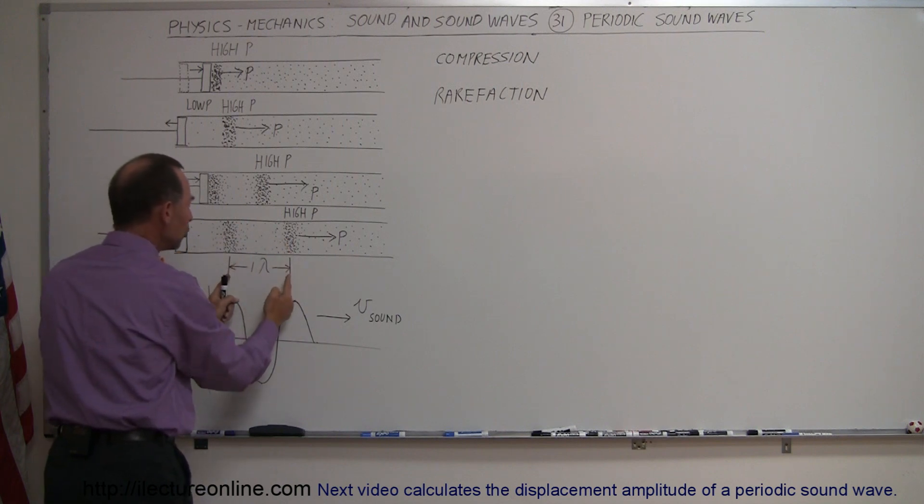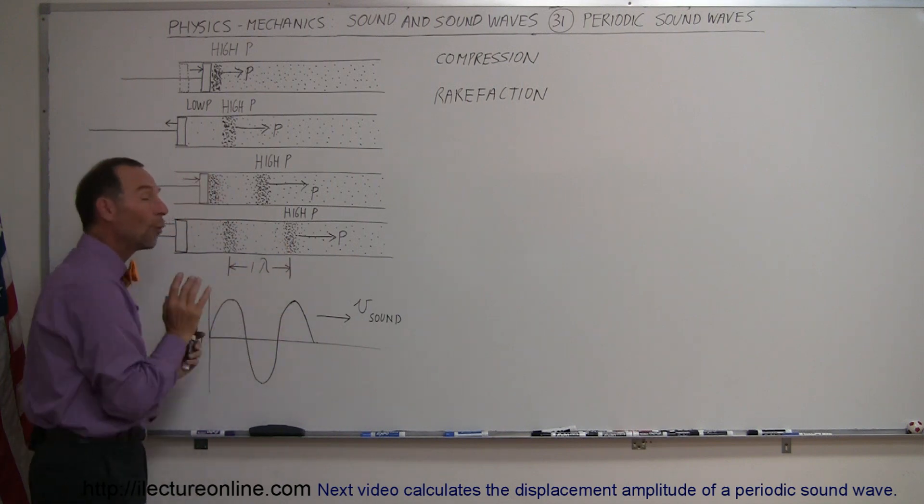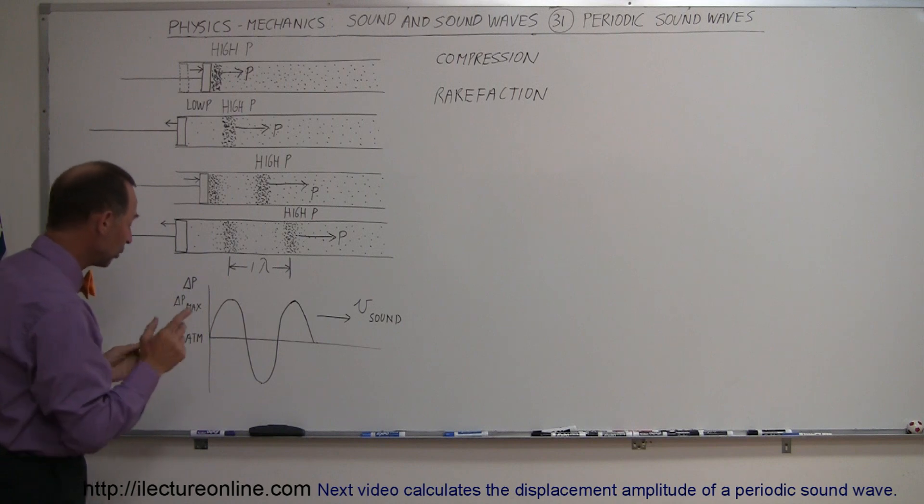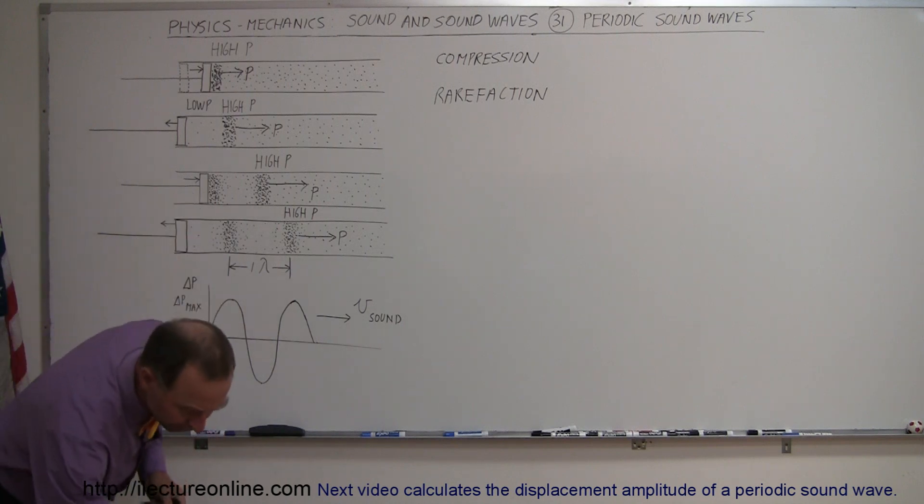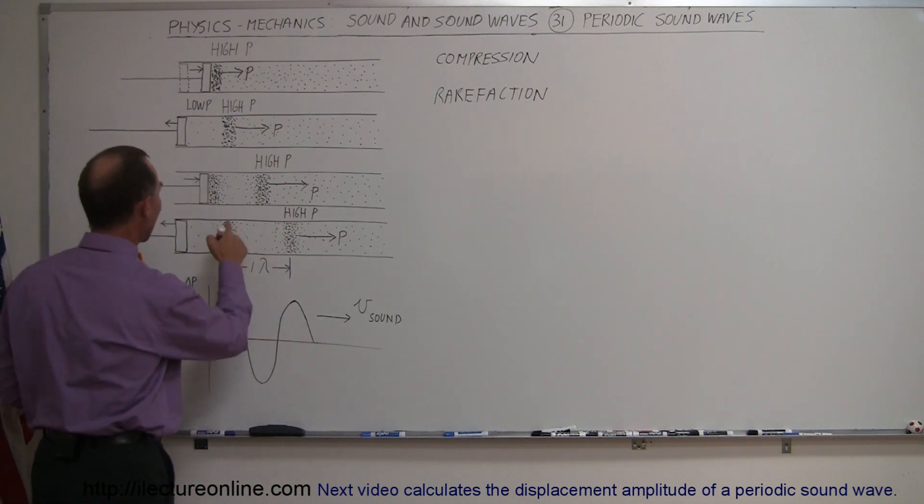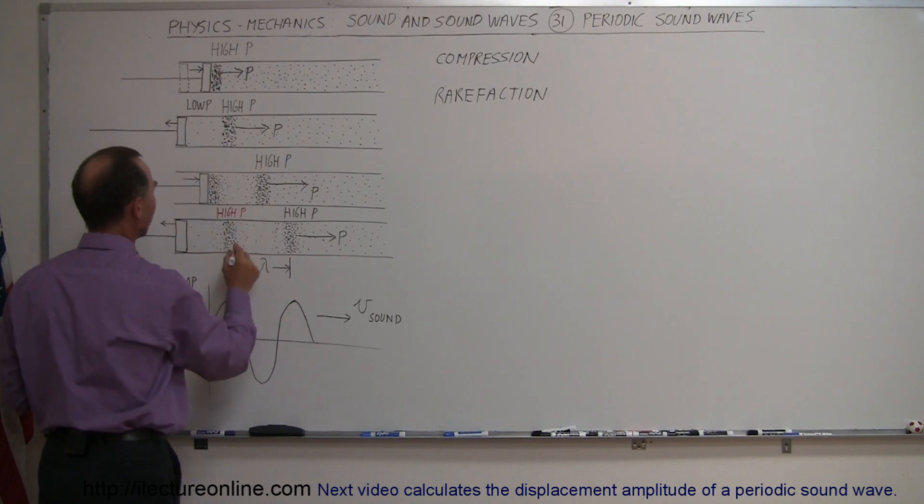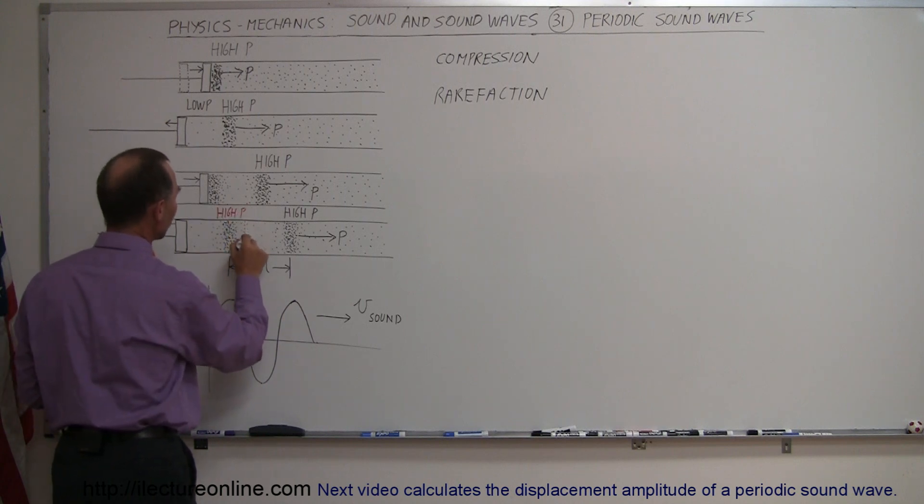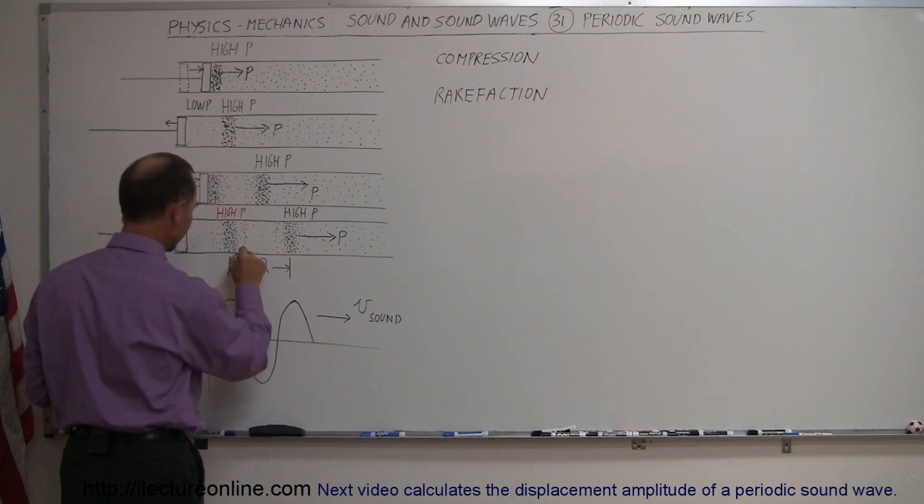The distance between two compressions is called the wavelength. This would be high pressure right here, and over here this is normal or atmospheric pressure, which would be this point right there.